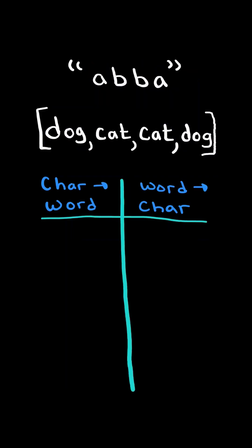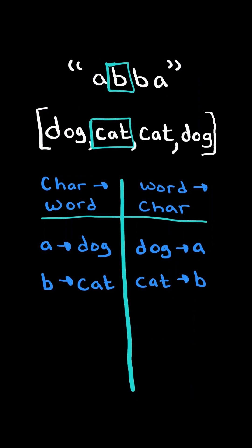Otherwise, we will have two dictionaries mapping the character to the word or the word to the character. In the first iteration, we update both dictionaries and do the same in the next iteration.